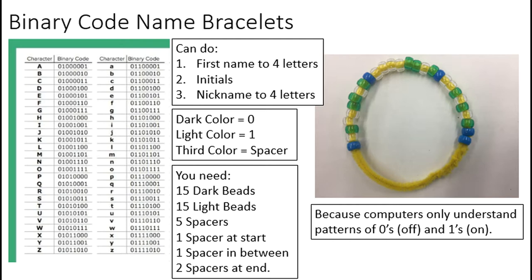We usually have them choose a dark color to represent zero, a light color to represent one, and a third color as a spacer. Kids make the binary code bracelets and usually love them, get super excited about them, and it's really fun.